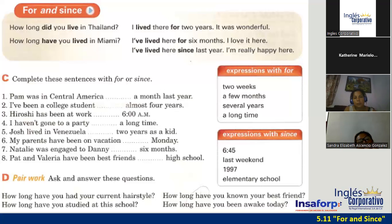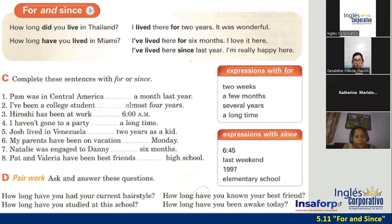Letter C: complete these sentences with 'for' or 'since.' Number one: Pam was in Central America ___. What do you think, guys — is it 'for' or 'since'? For. Pam was in Central America for a month last year. Muy bien.